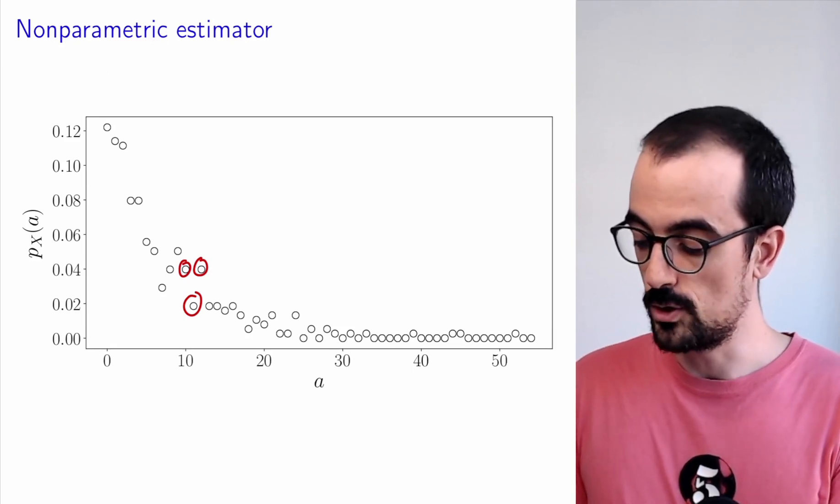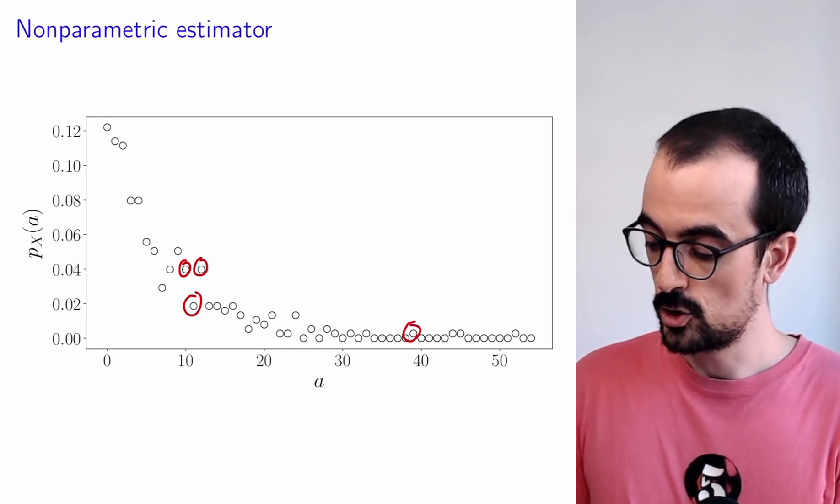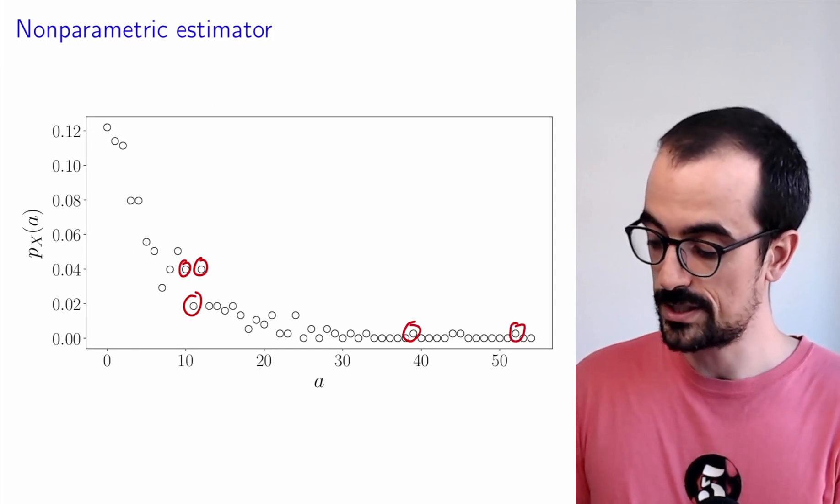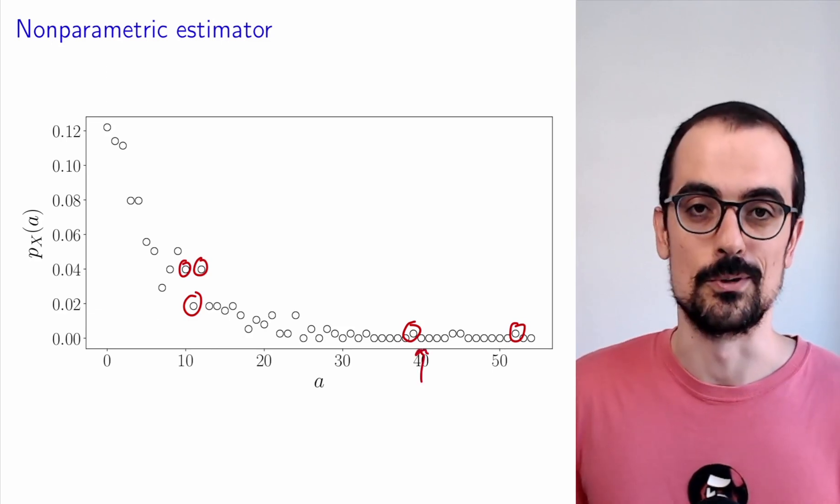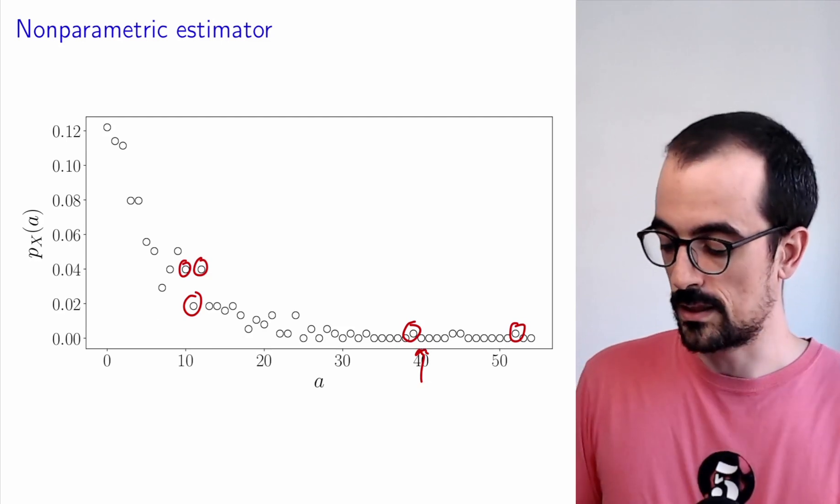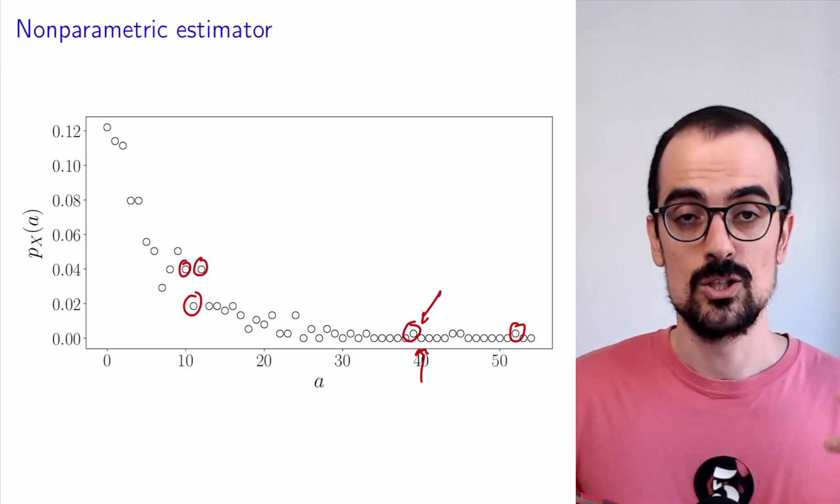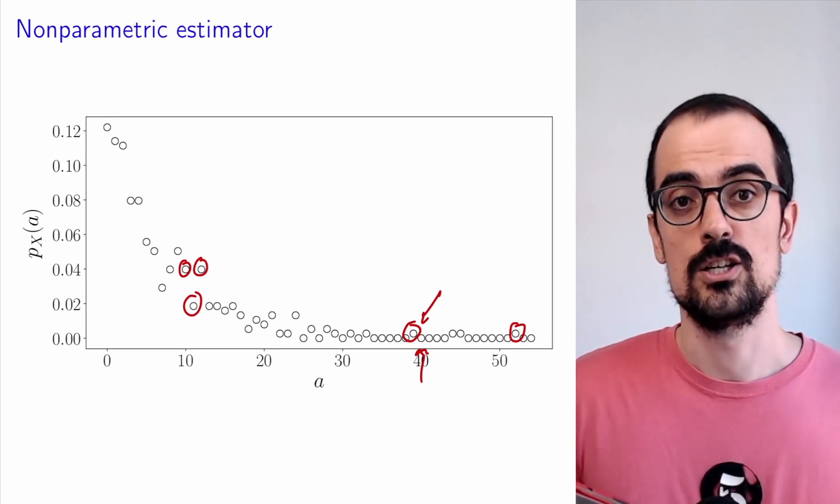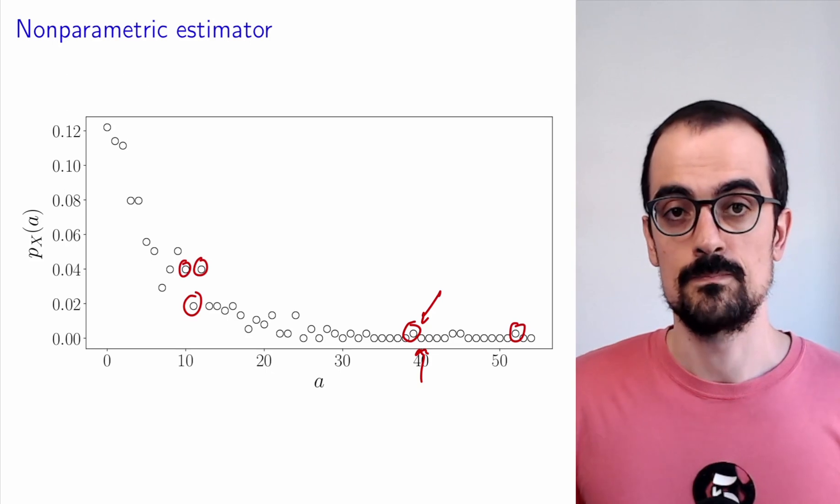Similarly, if we look here, the probability of seeing a streak of length 39 or 52 is non-zero, but the probability of seeing a streak of length 40 is zero. Do we really believe that? No. What's happening is that these are events with quite low probability and we don't have enough data to observe them sufficiently, so the estimate of the probability is inaccurate.